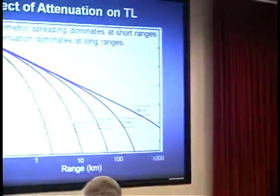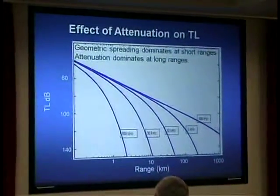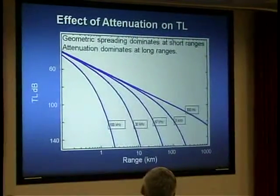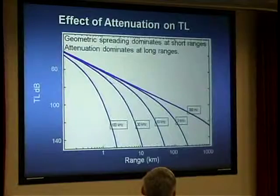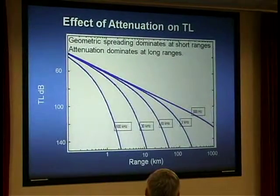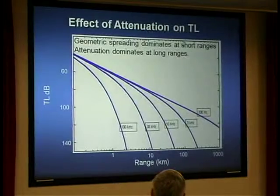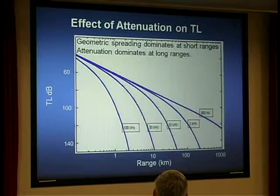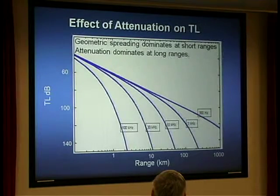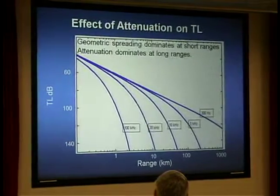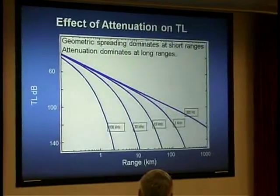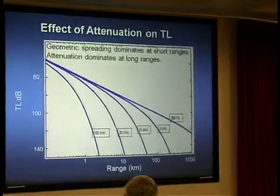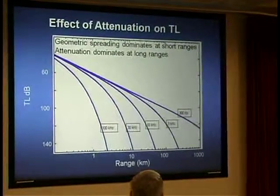Each of these curves shows attenuation as a function of range at different frequencies. A straight line would indicate pure spreading with no attenuation. At 300 Hz, the line is more or less straight as far as you want to go. At 100 kHz, the line curves down rapidly beyond a kilometer — significant absorption. This is why porpoises echolocating at 100 kHz aren't detecting things very far away, whereas a blue whale singing at around 15 Hz can propagate forever.